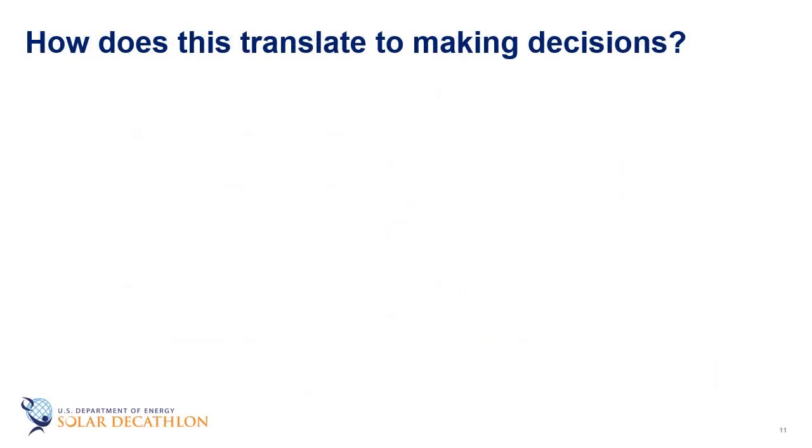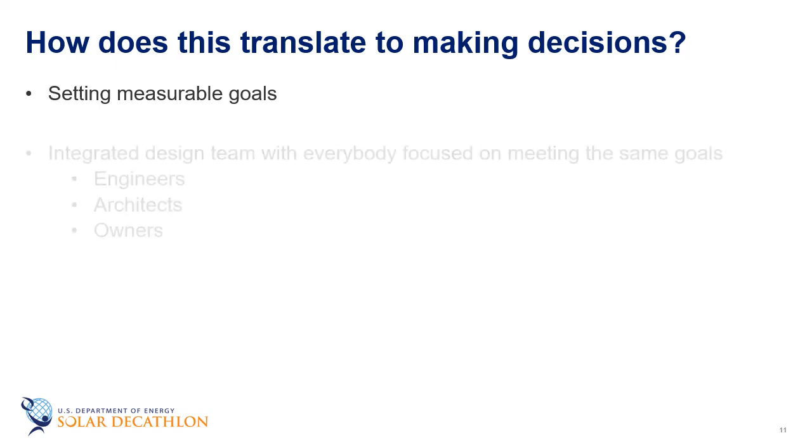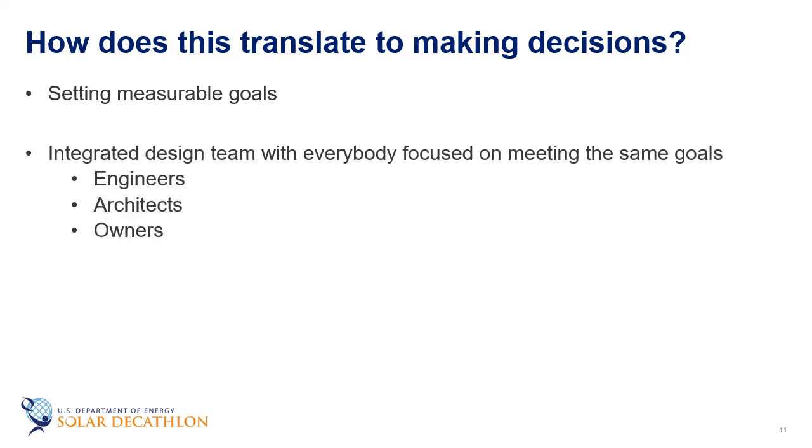So how does this translate to making decisions? Well it translates to making decisions in that we need to think about setting goals. And we need to think about an integrated design team and that everybody focused on meeting the same goal, the engineers, the architects, and owners all have to want to do this. It all starts with elements such as the envelope design and the window design and getting those pieces right first. And we're going to talk about that in future episodes.